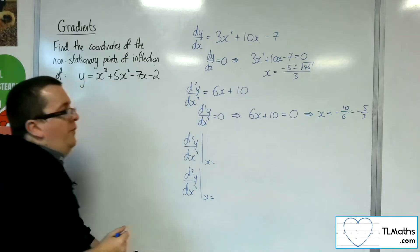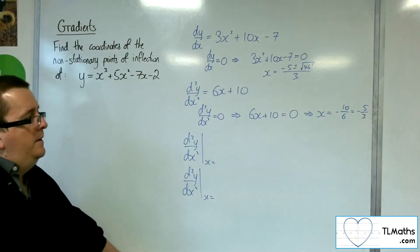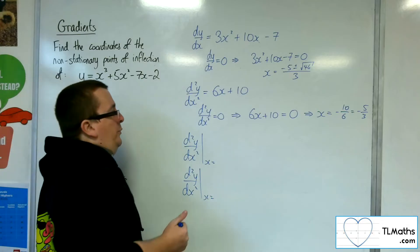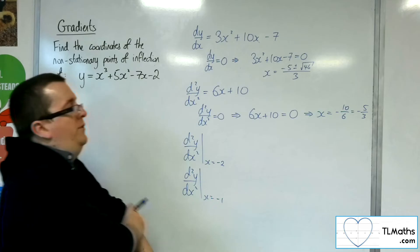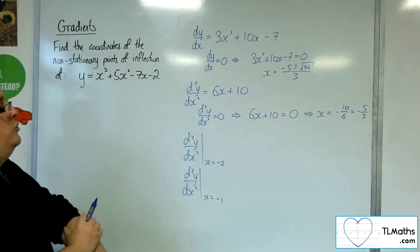We've got minus 5 thirds. If we chose, let's say, minus 2 and minus 1, so points either side of the point of inflection.